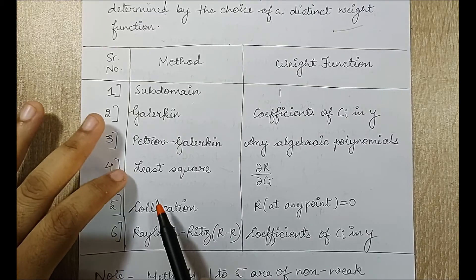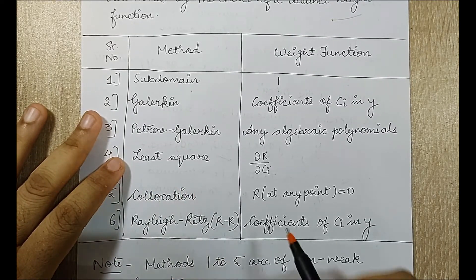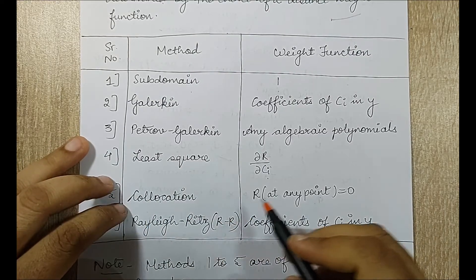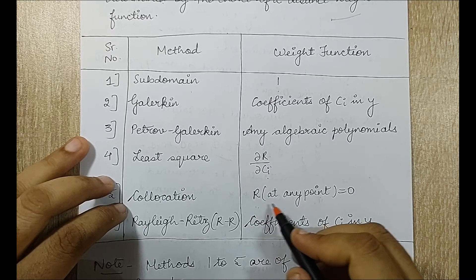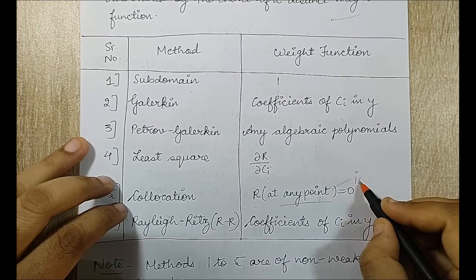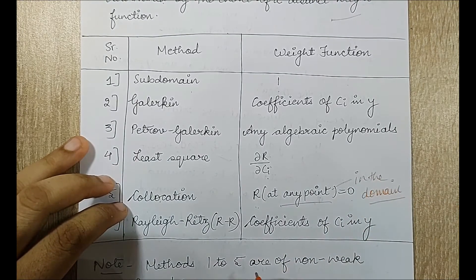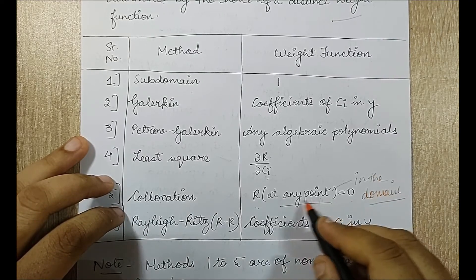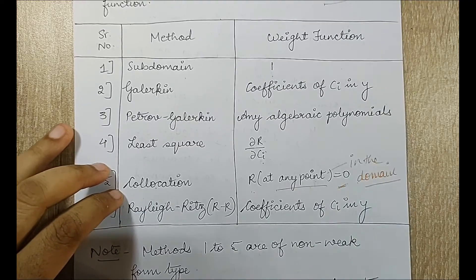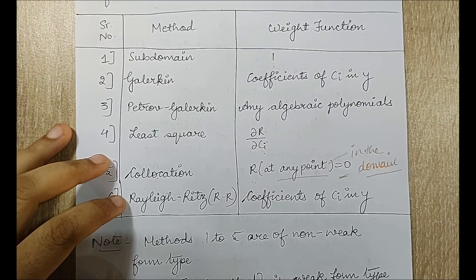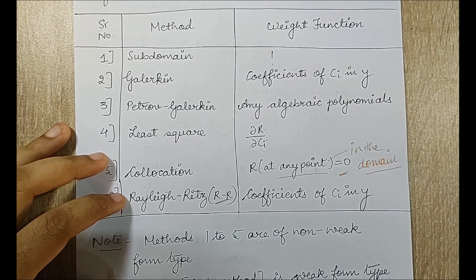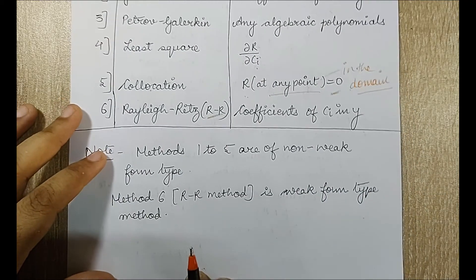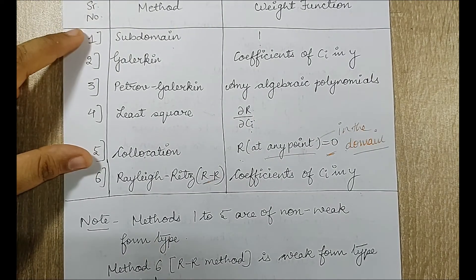In the least squares method, the derivative of the residue is taken with respect to the unknown coefficient. In the collocation method, the residue is assumed to be zero at any point in the domain — for example, at x equals 1, 2, 3, 4, or 5, the residue at that point is set to zero. The last method is the Rayleigh-Ritz (RR) method, where the weight function uses the coefficient of c_i in y, similar to Galerkin's method. Methods one through five are non-weak form type.